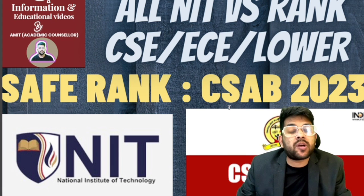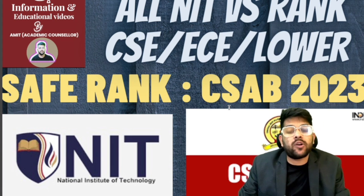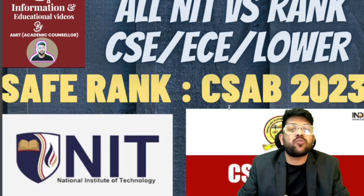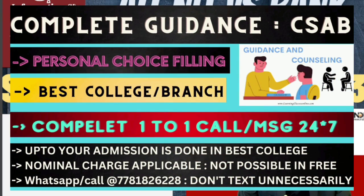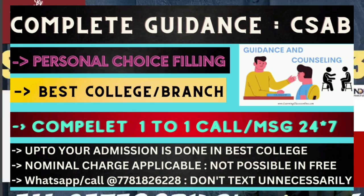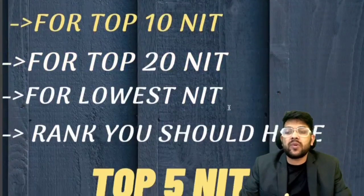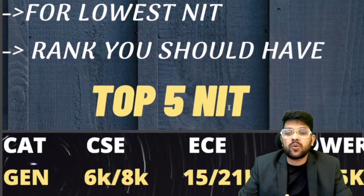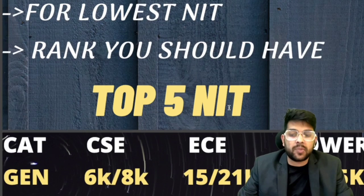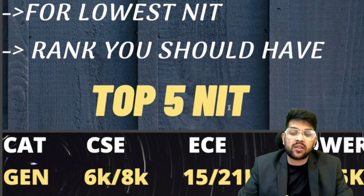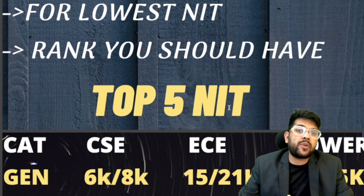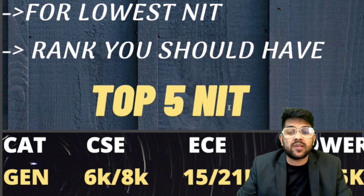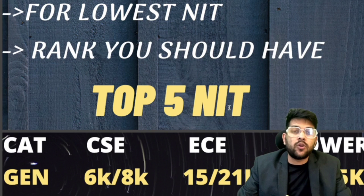There is some risk involved in waiting for the second round, which I've discussed in my previous video. Let's get started. For top five NIT colleges: if you want CSE, the cutoff is 6,000 and 8,000 (male and female); for EC it is 15,000 and 21,000; for lower branches it is 75,000 and 85,000. These are for general category.